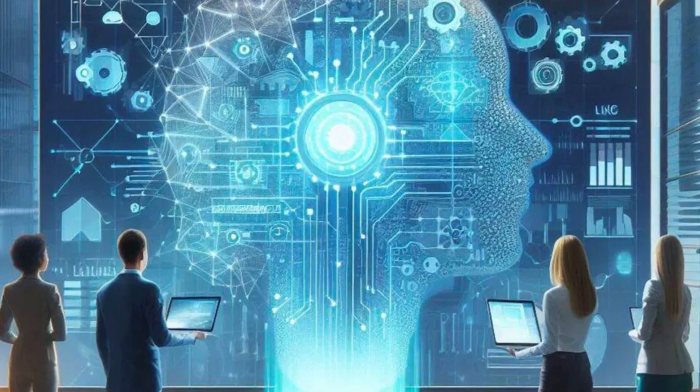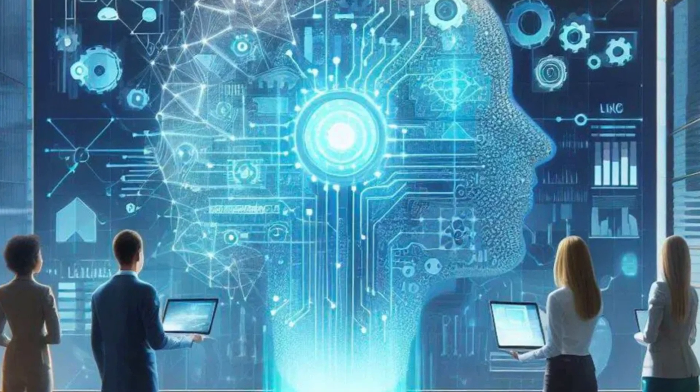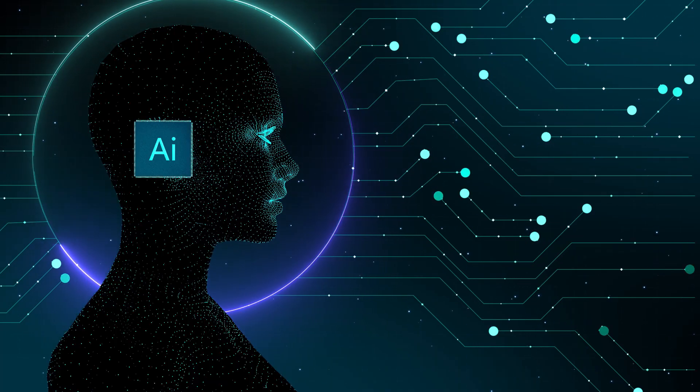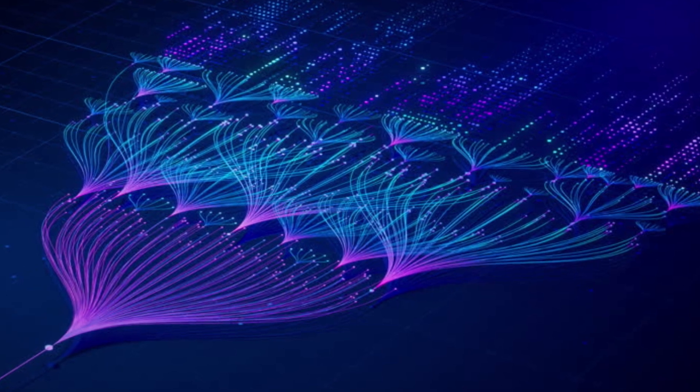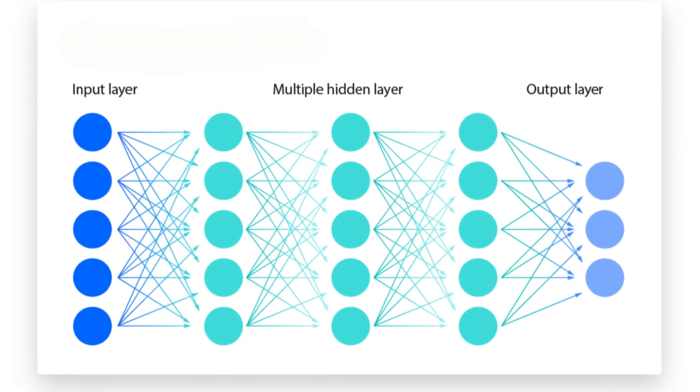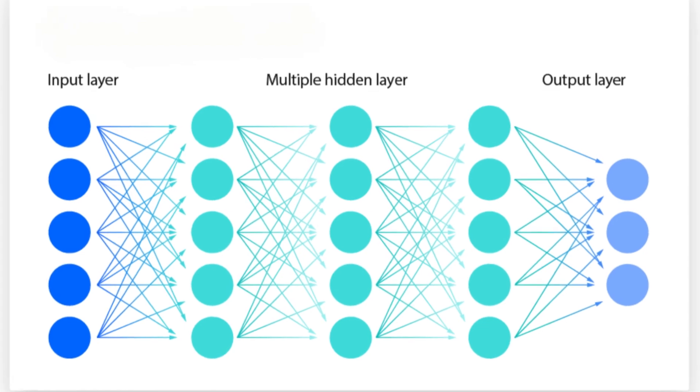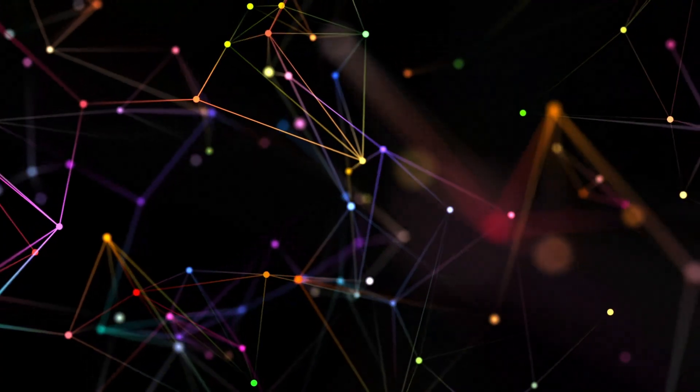Deep learning uses artificial neural networks, which are computational models consisting of interconnected nodes, or neurons, organized in layers. Each neuron receives input signals, processes them, and produces an output signal, which may then be passed onto other neurons in the network.